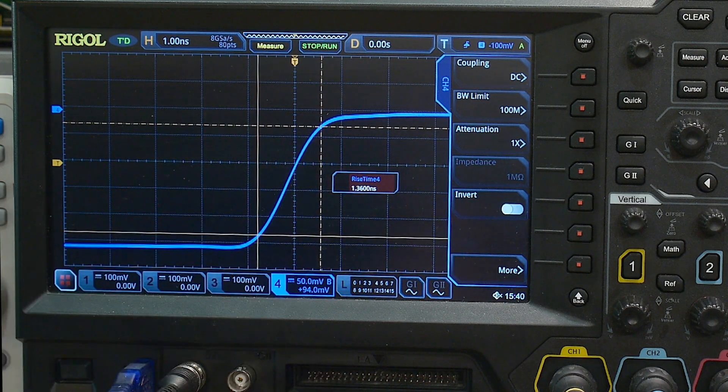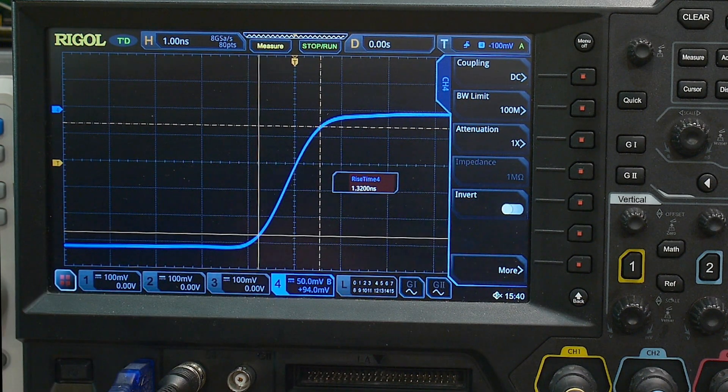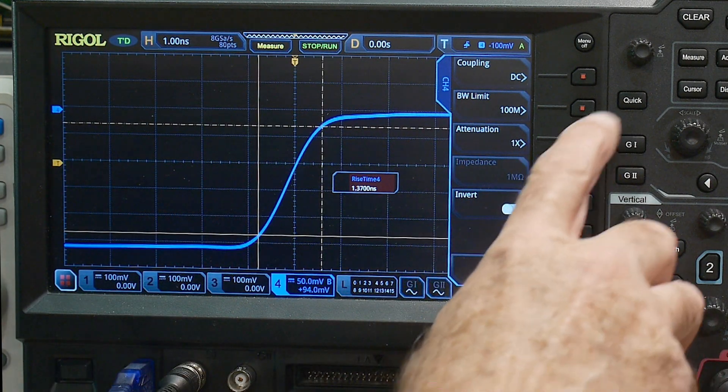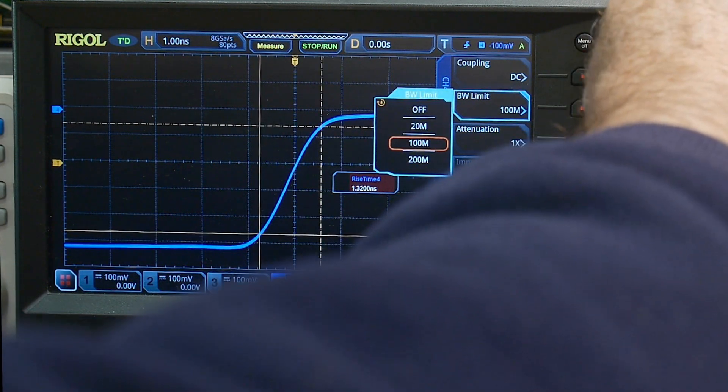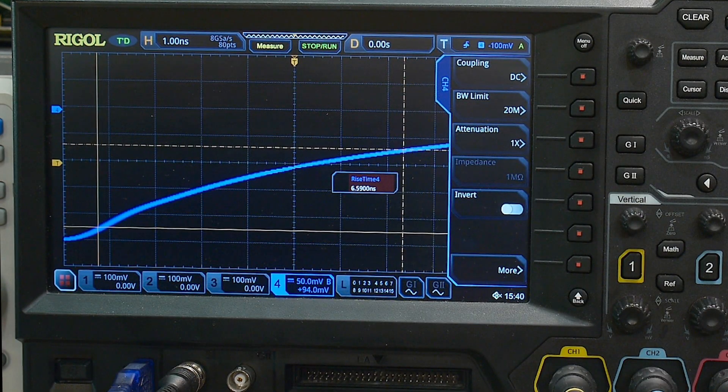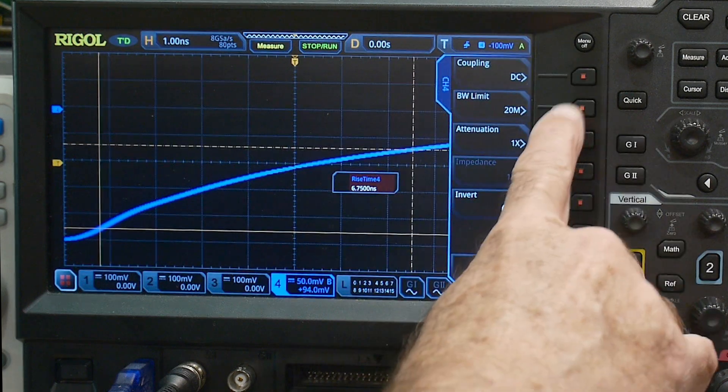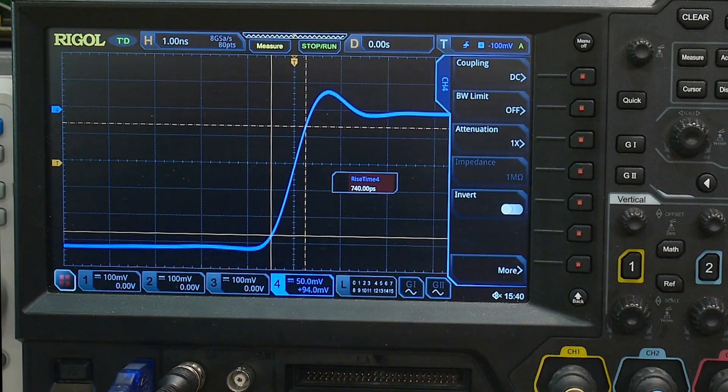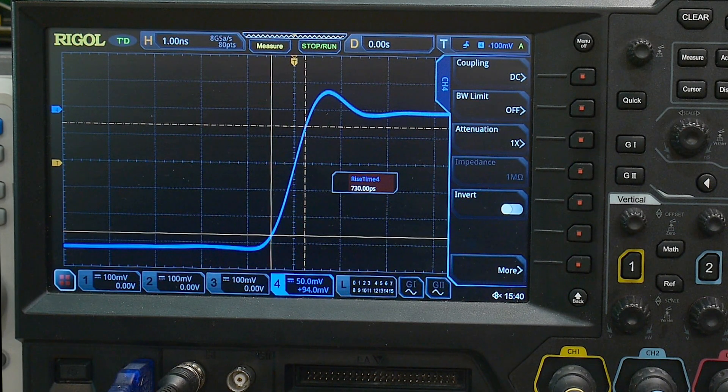If you had an oscilloscope and it was measuring 1.3, you'd say oh that's probably 100, and you could do the math and say that's 100 megahertz bandwidth. Here's a 20 megahertz bandwidth oscilloscope, very slow. These can be used for various things but we want to have it as fast as it can go, 350 megahertz.